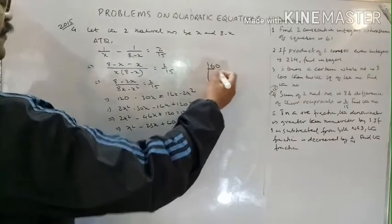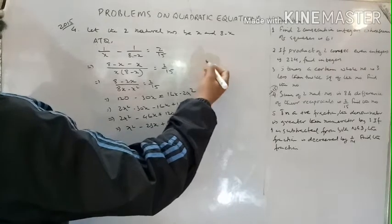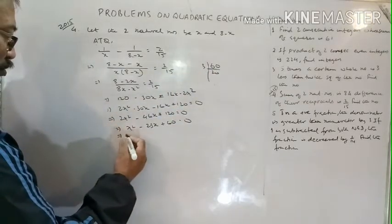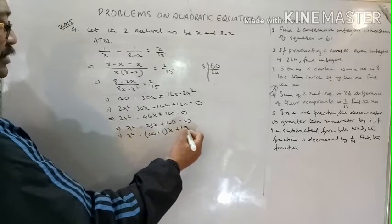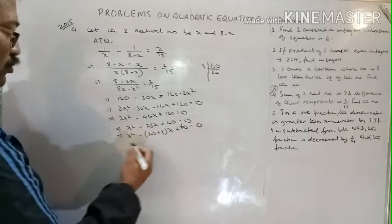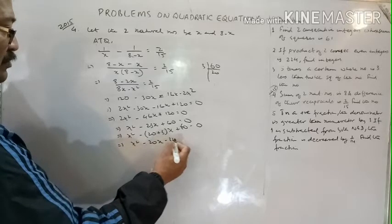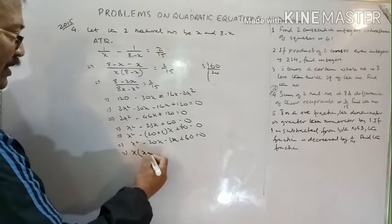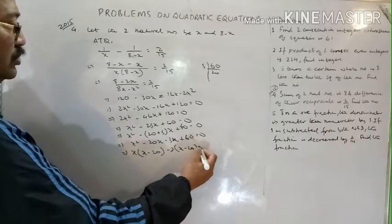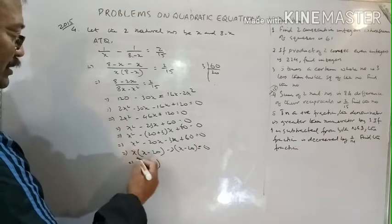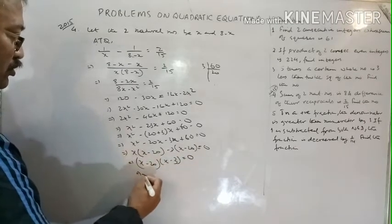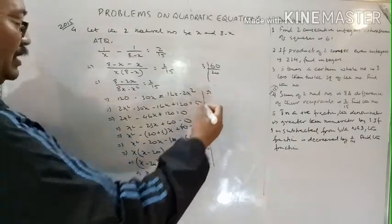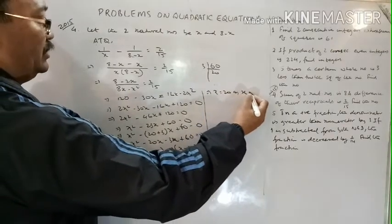Using middle-term breaking: product is 60 and sum/difference should be 23. We find 3 times 20 equals 60 and 20 plus 3 equals 23. So: x squared minus 20x minus 3x plus 60 equals 0. Taking x common: x(x minus 20), minus 3 common: minus 3(x minus 20) equals 0. So (x minus 20)(x minus 3) equals 0.